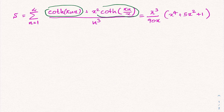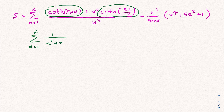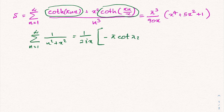We also have hyperbolic cotangent of pi times n over x. I'm going to begin with a result from a previous video. The previous question we solved was the sum from n equals 1 to infinity of 1 over n squared plus x squared, and when we solve this infinite sum we have the identity: 1 over 2ix times negative pi times cotangent of pi times ix, plus 1 over ix.